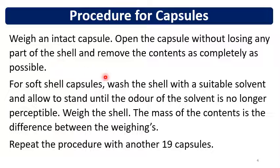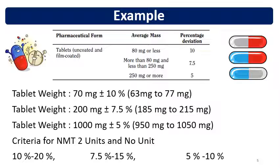We need 20 units total. For a tablet with a weight of 70 mg, the limit is 10%, giving a range of 63 mg to 77 mg. For a tablet with a weight of 200 mg, the range is 185 mg to 215 mg with a percentage deviation of 7.5%. For a tablet weight of 1000 mg, the limit is 5%, giving a range of 950 mg to 1050 mg. The criteria are: not more than 2 units differ by 10% / 7.5% / 5%, and no unit goes beyond 20% / 15% / 10% respectively.